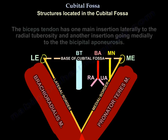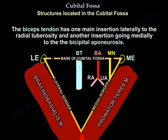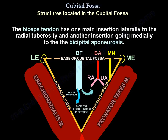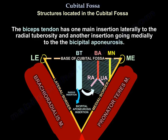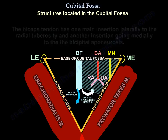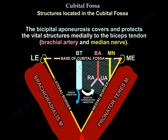The biceps tendon has one main insertion laterally to the radial tuberosity and another insertion going medially to the bicipital aponeurosis. It covers and protects the vital structures medially, which are the brachial artery and the median nerve.